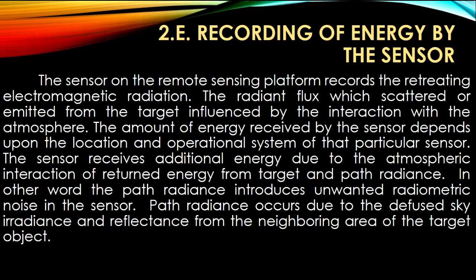The amount of energy received by the sensor depends upon the location and operational system of that particular sensor. The sensor receives additional energy due to the atmospheric interaction of returned energy from the target and path radiance. In other words, path radiance introduces unwanted radiometric noise in the sensor. Path radiance occurs due to diffused sky irradiance and reflectance from the neighboring area of the target object.